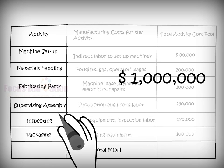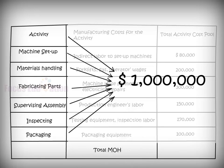With the total MOH calculated, the company now must determine how much of the total estimated $1 million relates to each activity.